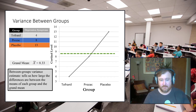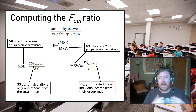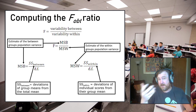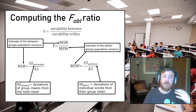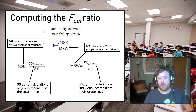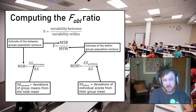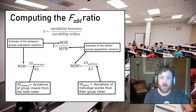The F ratio is the variance between (explained by the IV) divided by the variability within (variance left unexplained). We compute this as F equals mean square between over mean square within. Those are estimates of the between- and within-group population variance, based on sum of squares values — sum of squares divided by the respective degrees of freedom, whether between or within.